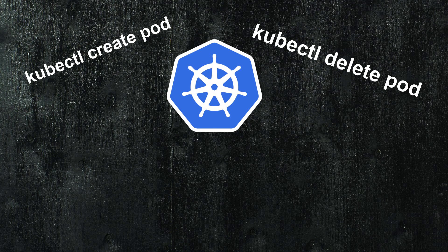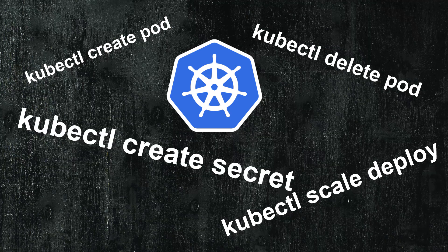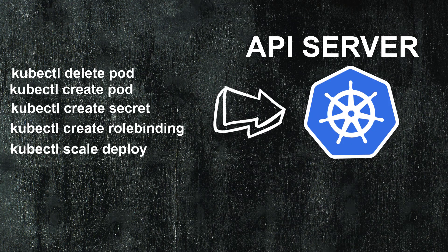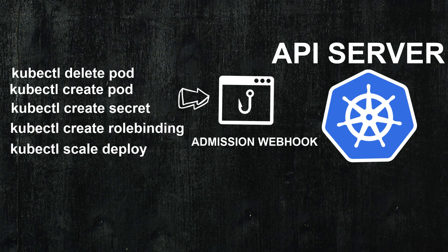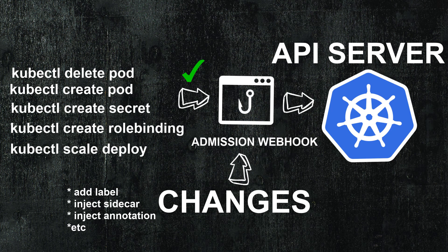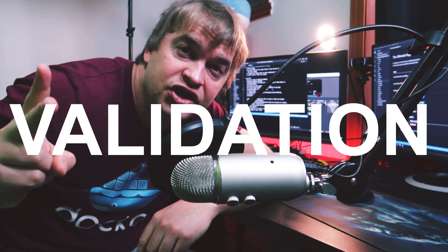What are admission webhooks in Kubernetes? When events happen like when you create a pod, delete a pod, scale a deployment, create a secret or an RBAC rule, these events or requests are generally invoked through the API server. Admission webhooks allow us to intercept these requests at different stages. We could intercept the request before it hits the API server and inject changes, or we can intercept the request after it's been validated by the API server and either accept or reject it. There are two types of admission webhooks: the mutating webhook and the validation webhook.